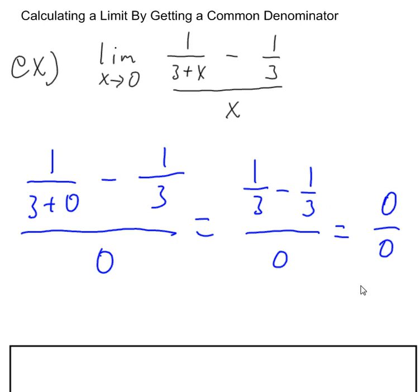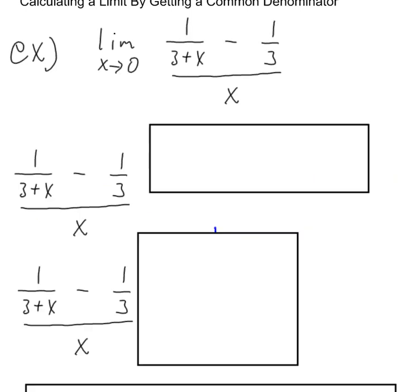So we're getting that zero over zero form, which needs more work. So we know we need to try to do something to remove that discontinuity. So here this technique is using the common denominator to try to simplify this fraction.